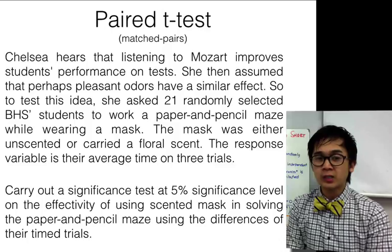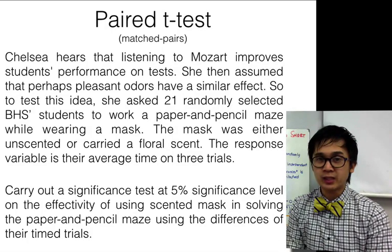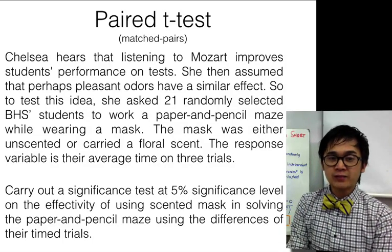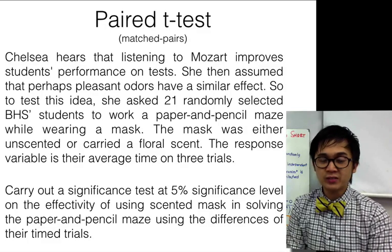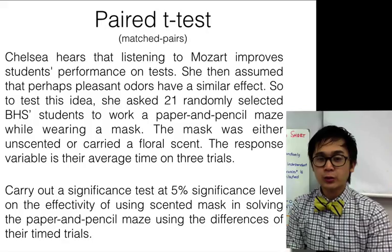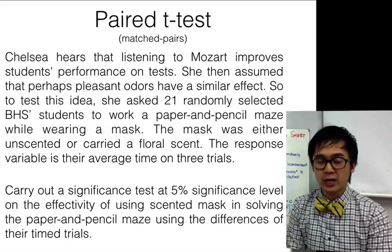The response variable is the average time on three trials. We'll carry out a significance test at 5% significance level on the effectiveness of using scented masks in solving the paper and pencil maze using the differences of their timed trials.